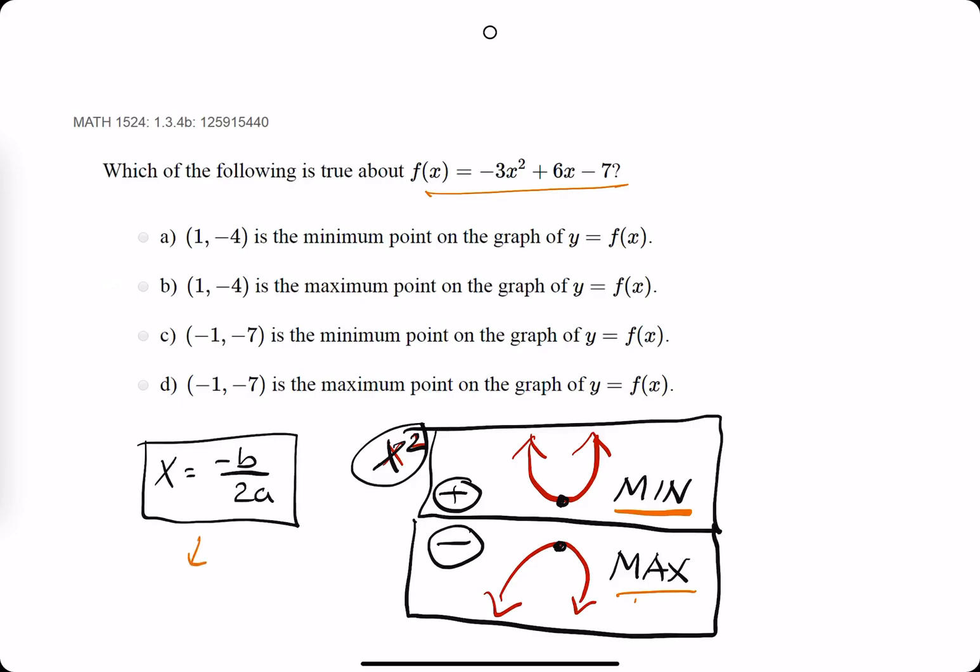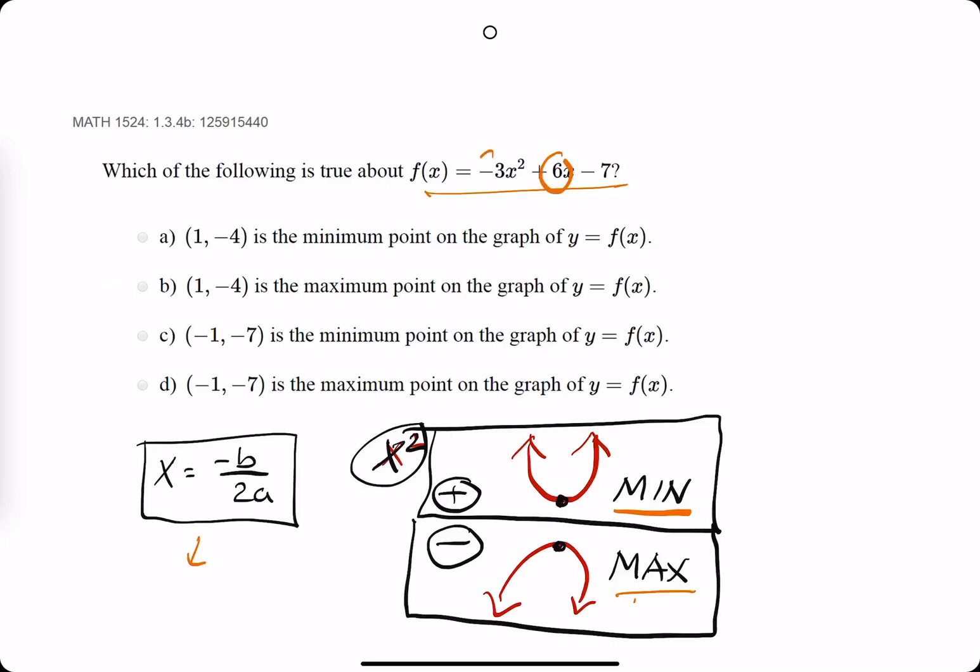So if we use the formula for the x value of the vertex, we will find where it occurs. So negative b over 2a, we have our b value of positive 6. We have our a value of negative 3. So we say that x is equal to negative b, which is negative 6, over 2 times a, so 2 times negative 3. So we get a negative 6 over a 2 times negative 3 is negative 6. So negative 6 over negative 6 is a positive 1.